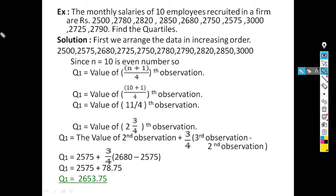Next example: the monthly salaries of 10 employees recruited in a firm are ₹2500, ₹2780, ₹2820, ₹2850, ₹2680, ₹2750, ₹2575, ₹3000, ₹2725, ₹2790. Find the quartiles Q1, Q2, and Q3. The first step is to arrange the data in increasing order.